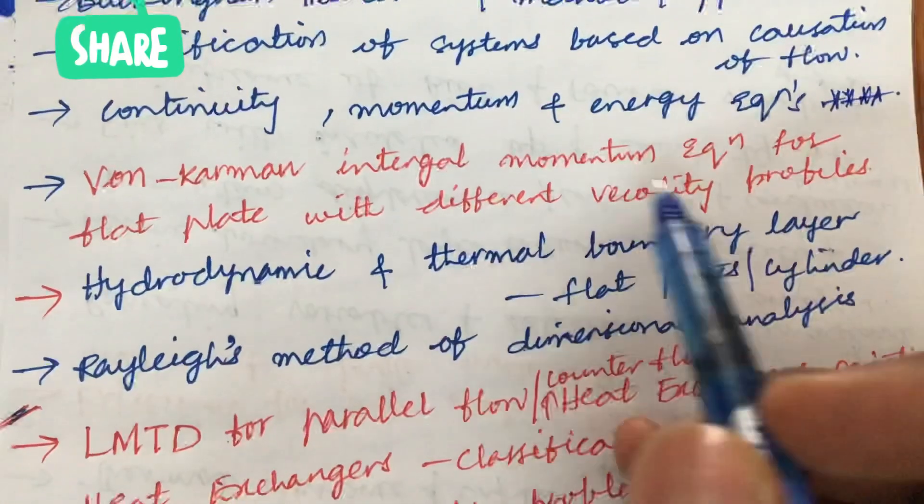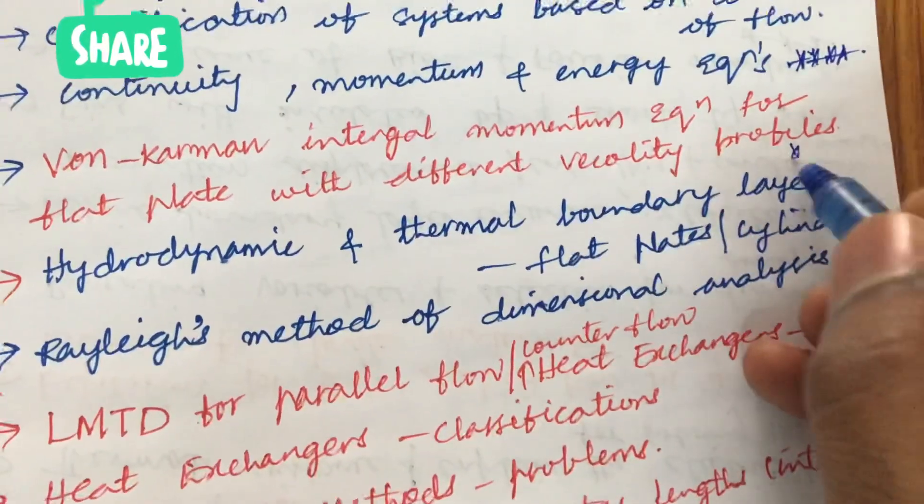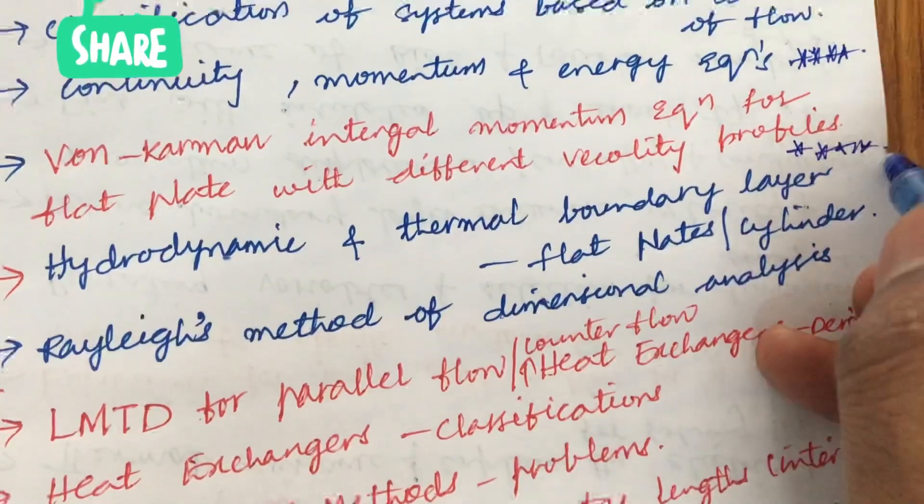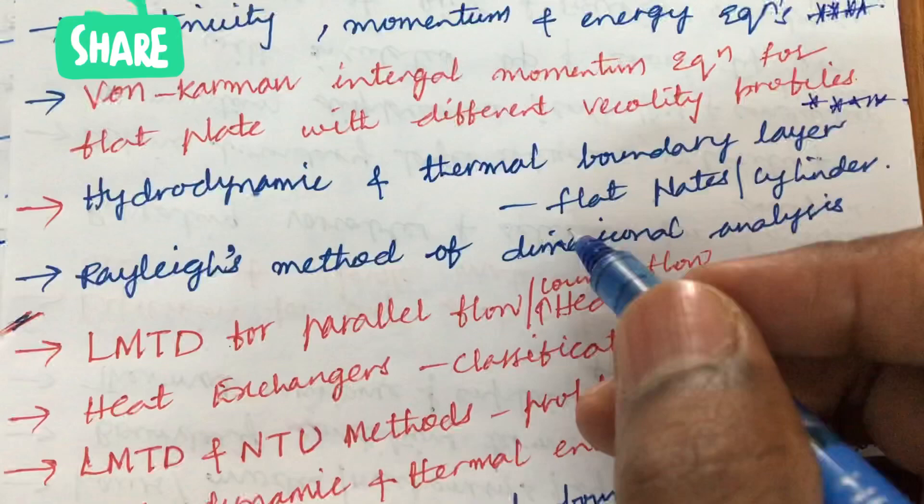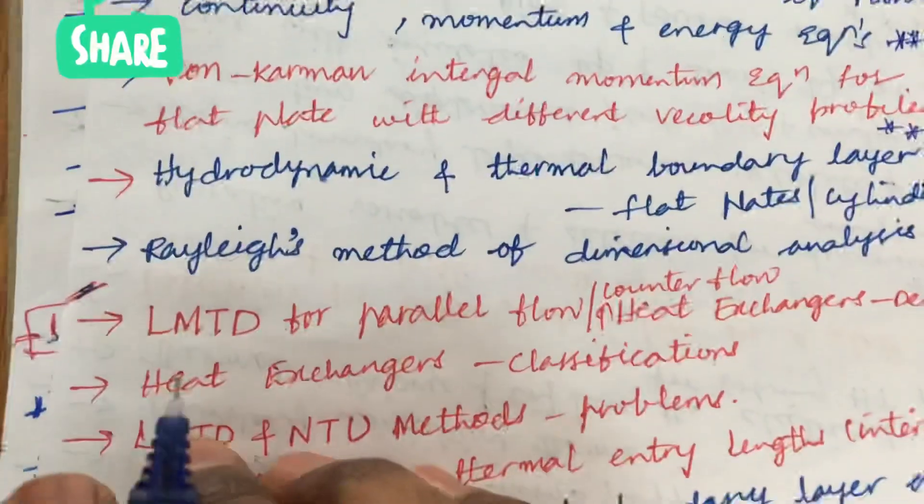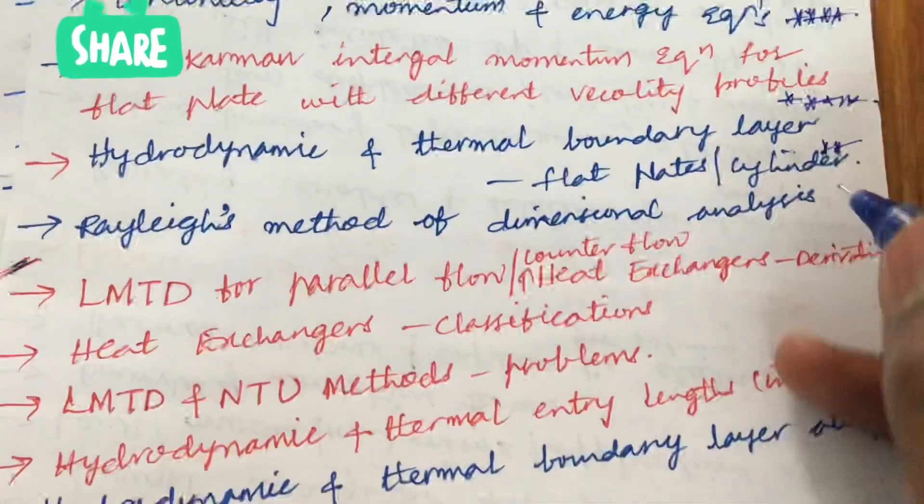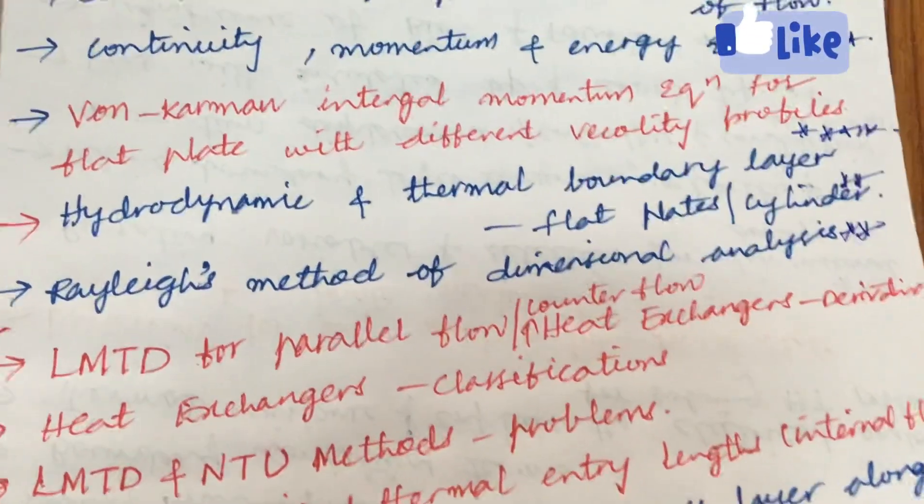Later, von Karman integral momentum equation for a flat plate with different velocity profiles. This is also very important and a gunshot question. Later, the hydrodynamic and thermal boundary layer for the flat plates as well as cylindrical is also an important question. The Rayleigh method of dimensional analysis is asked for seven marks several number of times from unit 2.